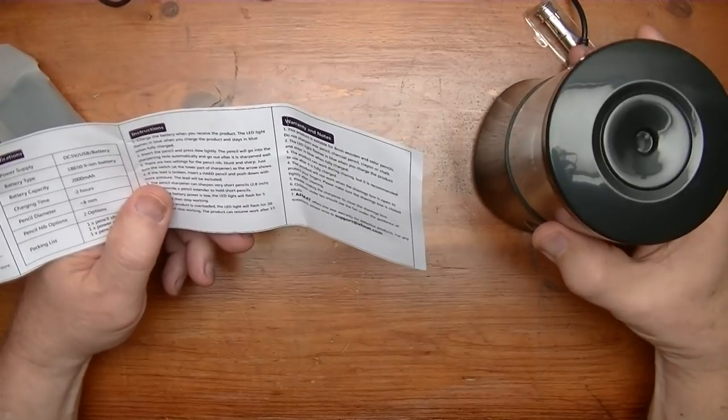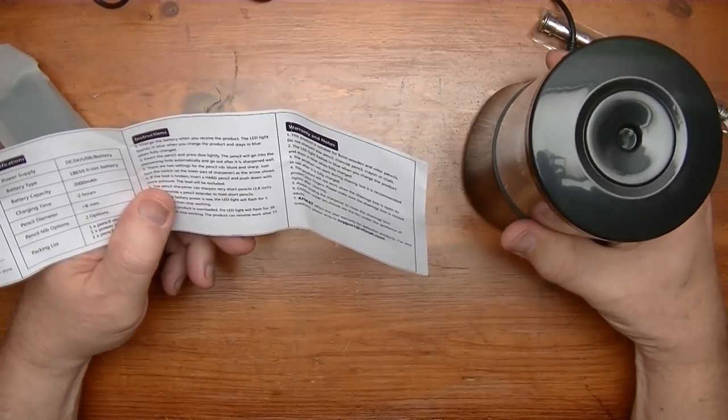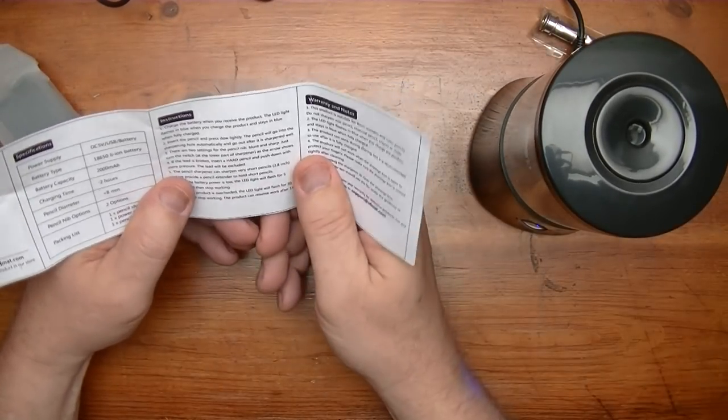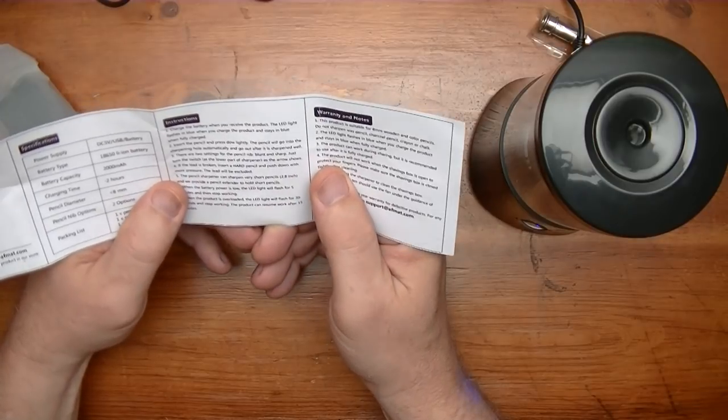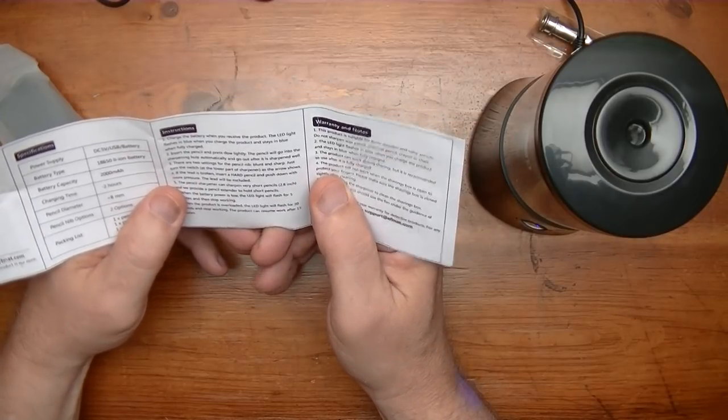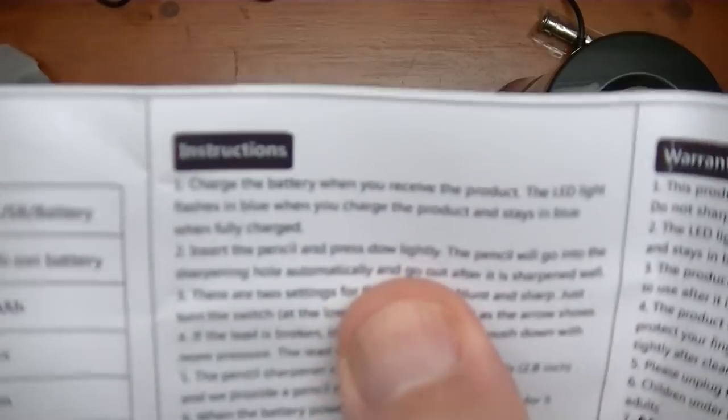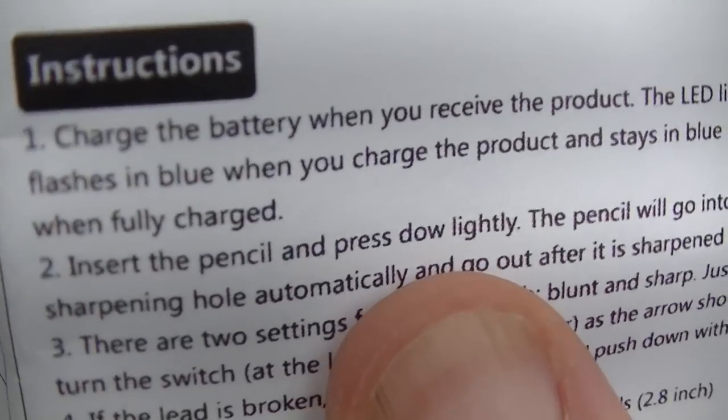When you charge a product and stays in blue when fully charged. Insert the pencil and press dow lightly. You got to press dow lightly. See d-o-w dow. I believe that's supposed to be down.